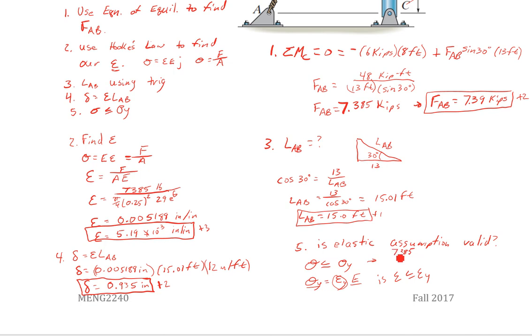So we're going to have 7,385 over our area which was pi over 4 times 0.25 squared. I didn't calculate that out before I started. Let me plug that into the calculator quick. 0.25 squared times pi divided by 4 times 7,385, so I found that to be 150,445 psi.